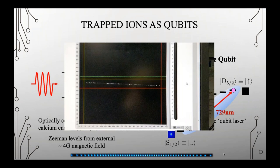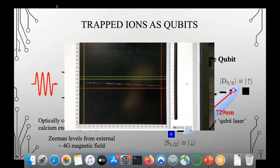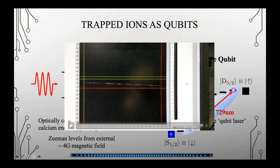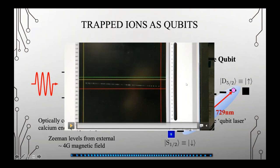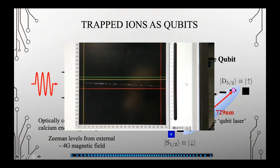I took this video on my phone — it shows the ions in real time on the camera, twinkling. I'm driving them with the qubit laser, taking them from the S state to the D state and back again, which is why you see them twinkling. It's really cool to actually be able to see individual ions in the lab on the camera — I can never quite get over that.